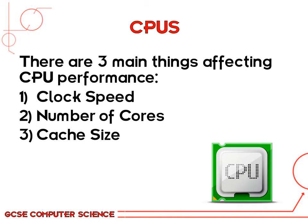We already know how important a CPU can be to a computer system. As mentioned in the earlier chapter about CPUs, there are three things affecting its performance: clock speed, the number of cores, and the cache size.